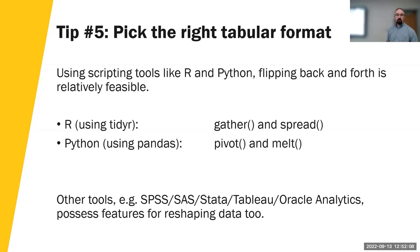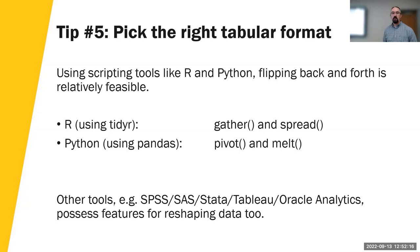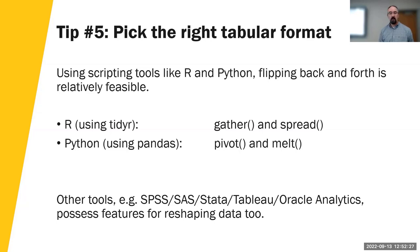In both R and Python there are very simple commands that allow you to flip back and forth between long and wide formats depending on your purpose. Think about that. If you're running into problems, ask yourself: is my data tidy? If you're going to show this to people, maybe flip it into a different format and then use it.